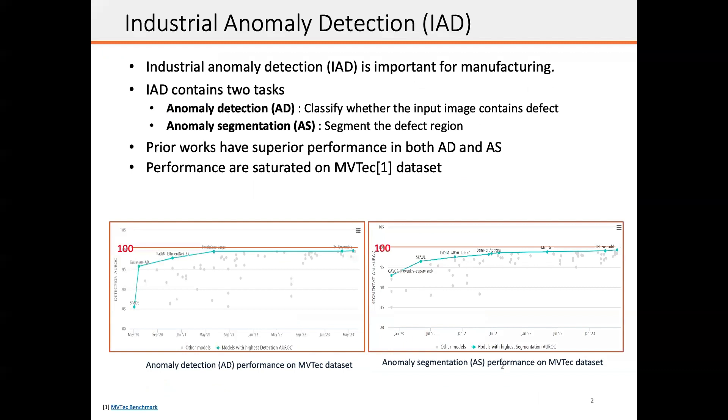Industrial anomaly detection is an important topic for manufacturing and contains two tasks. The first task is anomaly detection, which classifies whether the input image contains defect. The second is anomaly segmentation, which aims to segment the defect region.